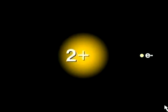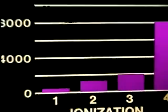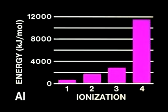Thus, each successive ionization requires more energy. This graph shows the way in which the ionization energies of the aluminum atom increase as successive electrons are removed.